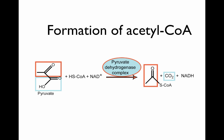In the fermentation video, we talked about how pyruvate is then reduced in fermentation to give very different products. In respiration, pyruvate is taken and completely oxidized, and in the process, the high-energy electrons are extracted from it. The first step is the formation of acetyl-CoA by the pyruvate dehydrogenase complex. It takes pyruvate and coenzyme A and puts them together to form acetyl-CoA, CO2, and extracts a couple of high-energy electrons in the form of NADH.